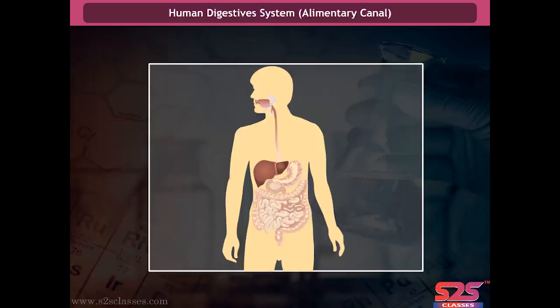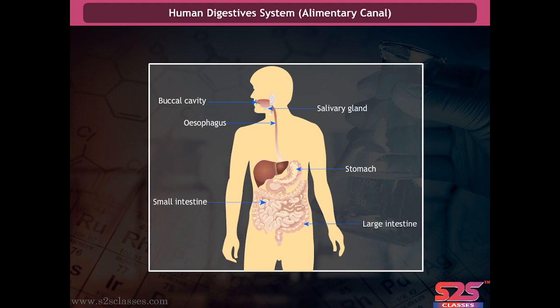The human digestive system has various compartments: the buccal cavity, food pipe or oesophagus, stomach, small intestine, large intestine, ending in the rectum, and the anus.